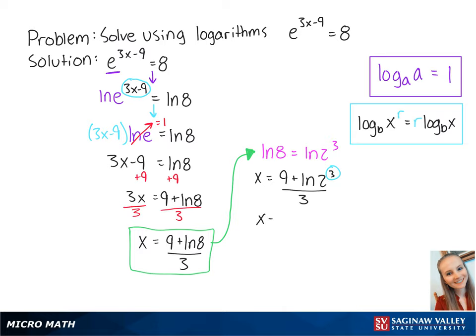we get x equals 9 plus 3 times the ln of 2 over 3. If we divide the numerator by 3, we get x equals 3 plus the ln of 2. This is an alternate answer.